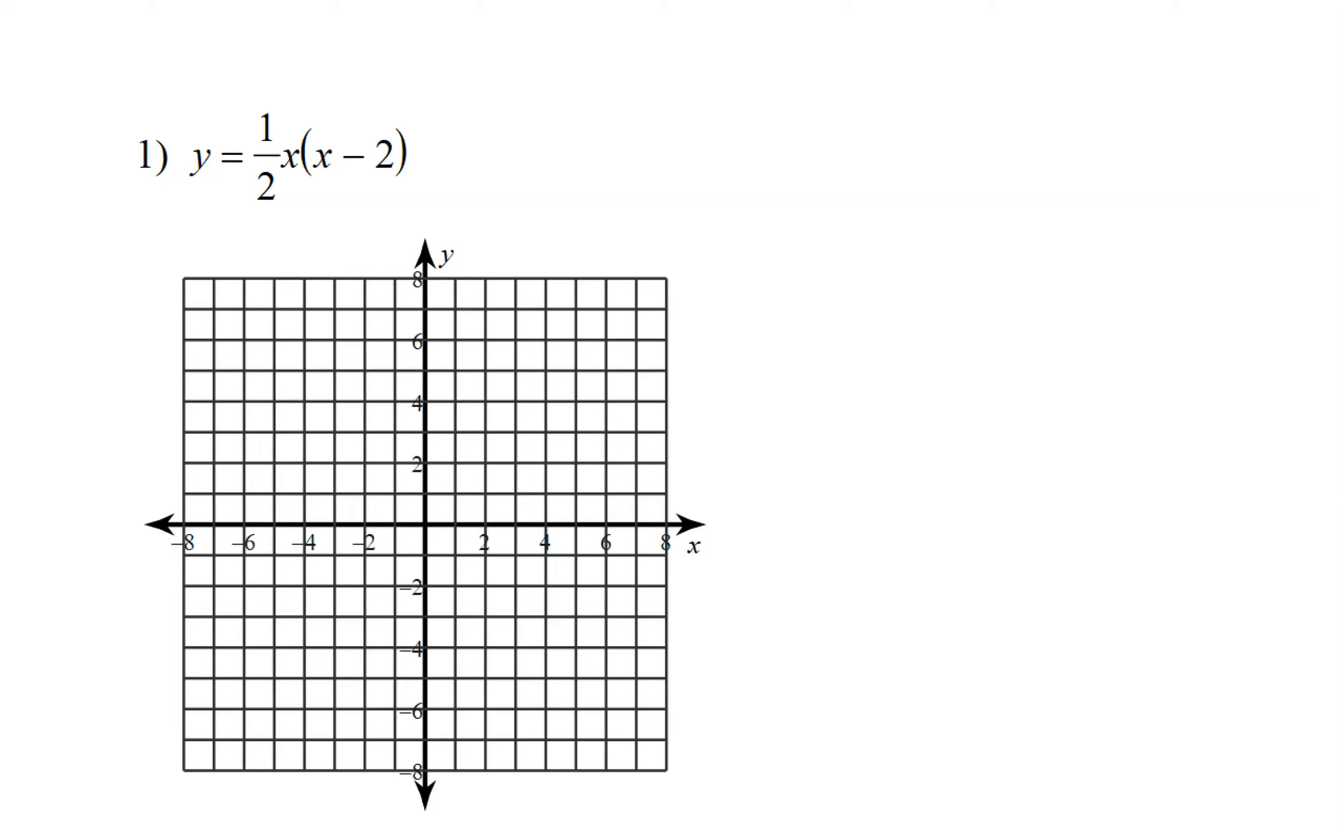It might be helpful for you to put parentheses around the 1 half x, because sometimes it's also written like x plus 2. The way we find the x-intercepts is to set both of these factors equal to 0. So you're going to set 1 half x equal to 0 and x minus 2 equals 0.